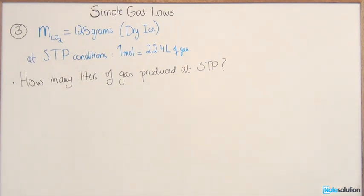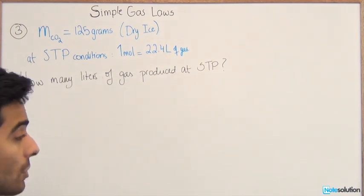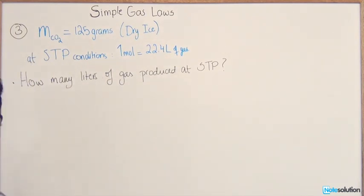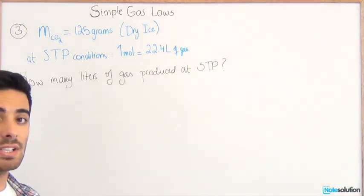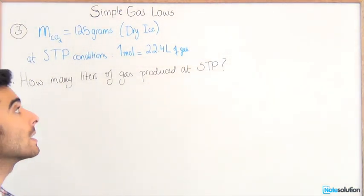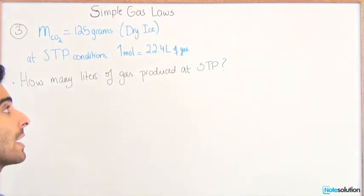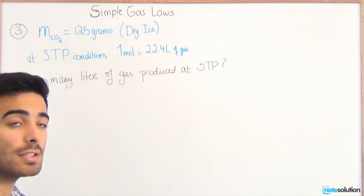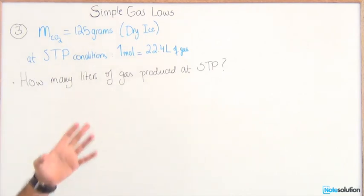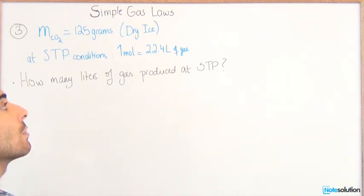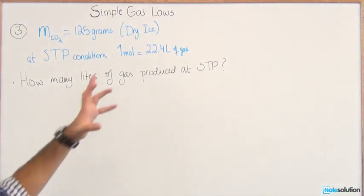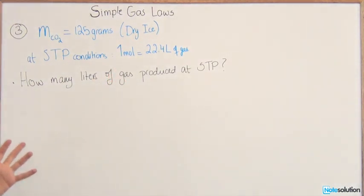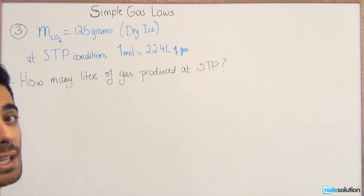What is STP? STP is standard temperature and pressure condition. At standard temperature and pressure condition, we have the temperature is 273 Kelvin, and at this temperature, having the temperature and the pressure constant, we have one mole of any gas would give us 22.4 liters. Using those, we need to find out how many liters of gas are produced at STP.